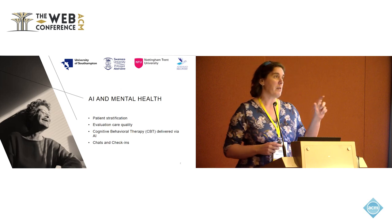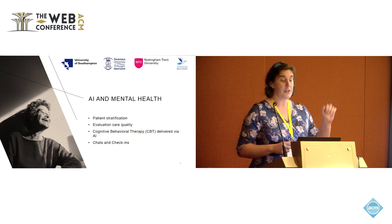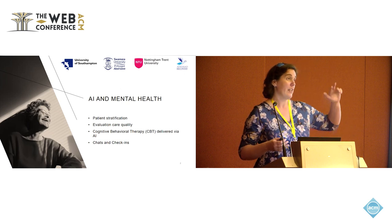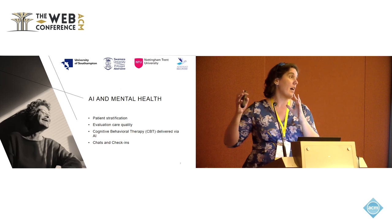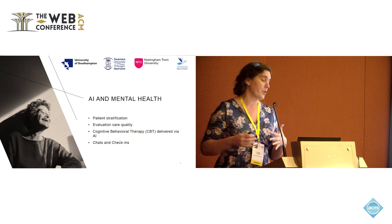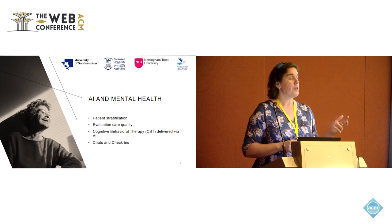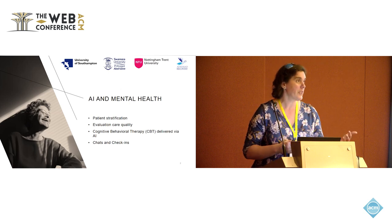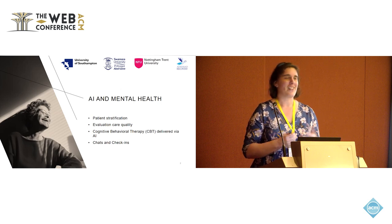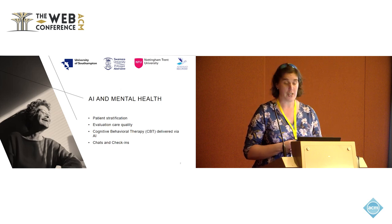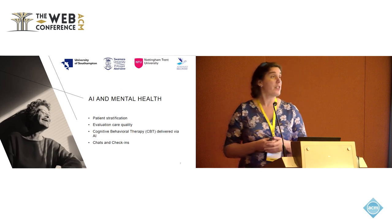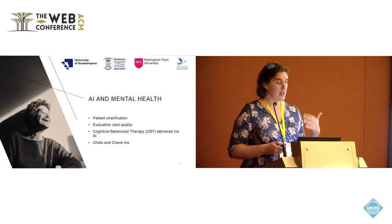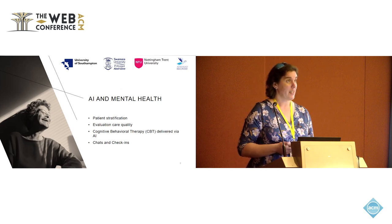Right now, AI is being applied towards mental health in a few different ways. There are quite a few systems that do patient stratification — basically saying you're a very high risk, a suicide risk, a low risk, or you have these types of disorders. There's usage around care quality — whether you've received care that has moved you forward versus being left alone for a long period of time. Some systems are actually delivering cognitive behavioral therapy in a step-by-step manner. And then there are chats and check-ins through AI.